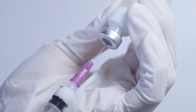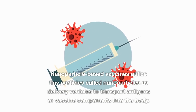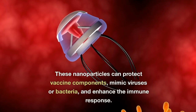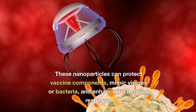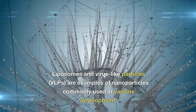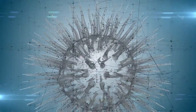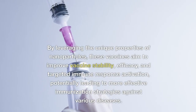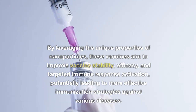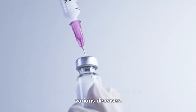What is a nanoparticle-based vaccine? Nanoparticle-based vaccines utilize tiny particles called nanoparticles as delivery vehicles to transport antigens or vaccine components into the body. These nanoparticles can protect vaccine components, mimic viruses or bacteria, and enhance the immune response. Liposomes and virus-like particles (VLPs) are examples of nanoparticles commonly used in vaccine development. By leveraging the unique properties of nanoparticles, these vaccines aim to improve vaccine stability, efficacy, and targeted immune response activation, potentially leading to more effective immunization strategies against various diseases.